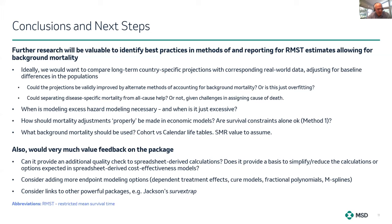Could separating disease-specific mortality from other causes be helpful, or not, given the challenges in assigning cause of death? When is excess hazard modelling necessary, and when is it — if you'll pardon the pun — just excessive? How should mortality adjustments properly be made in the economic models? Are survival constraints still okay (method one), or should we really be moving to method two or something more sophisticated?